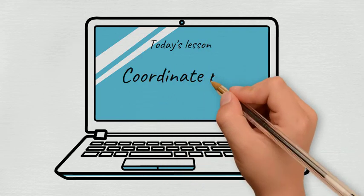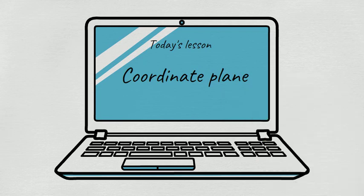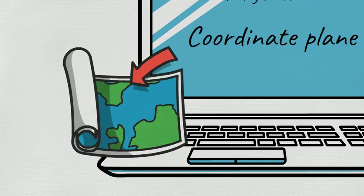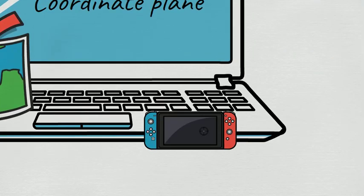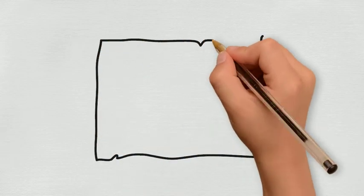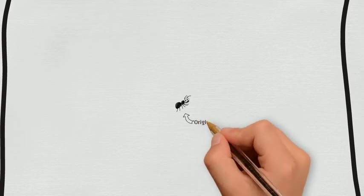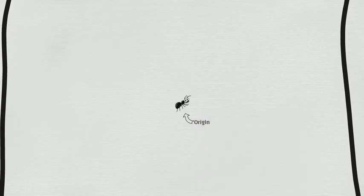Coordinate plane is a system to help us locate points on a two-dimensional surface, such as a map or a screen. Let's imagine that there is a little ant standing on a piece of paper.